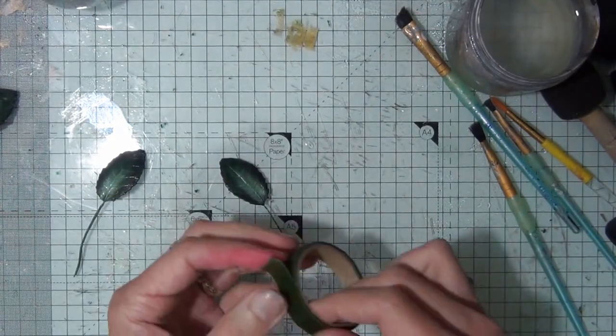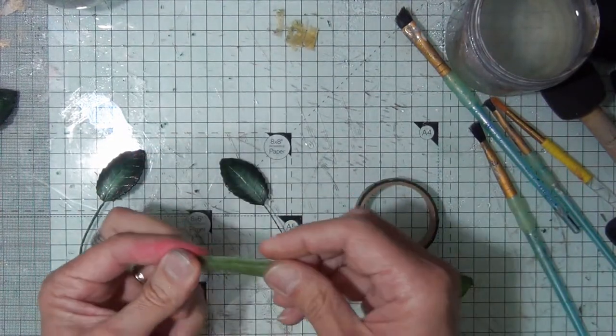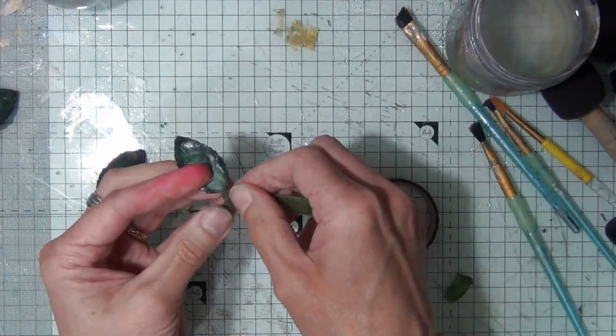Well, whilst the rose is drying, I am just using some of the florist tape to hide the wires on our rose leaves.